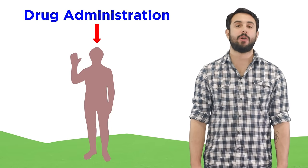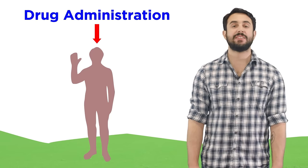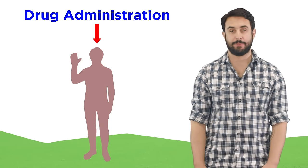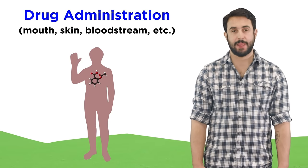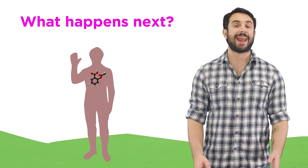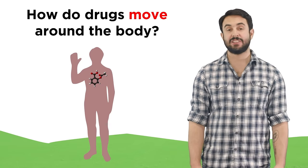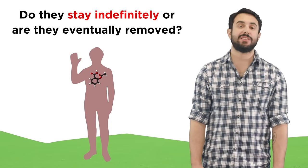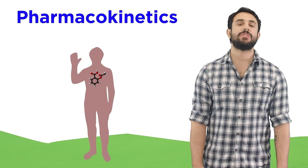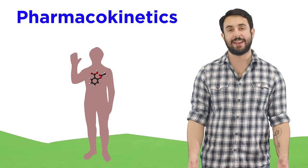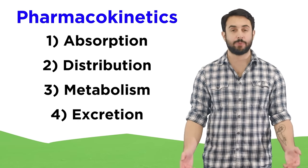In the previous tutorial, we learned about all of the different ways that drugs can be administered — the ways that drugs can enter the body, whether in the mouth, through the skin, directly into the bloodstream, or otherwise. Now we want to talk about what happens next. Once drugs are inside your body, how do they move around and get to where they need to go? Do they stay in the body indefinitely, or are they eventually removed from the body somehow? The study of pharmacokinetics deals with precisely these issues, and in learning about this, we can highlight four main processes.